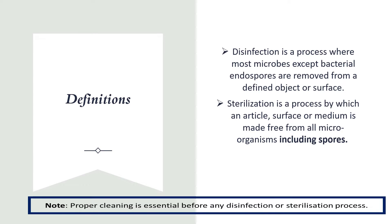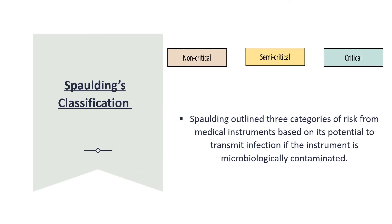Proper cleaning is essential before any disinfection or sterilization. The Spaulding classification classifies instruments into three categories: non-critical, semi-critical, and critical.